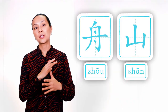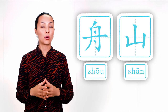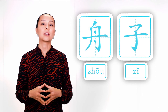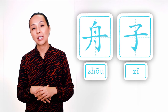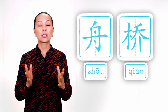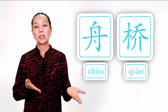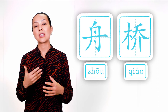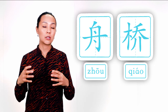As I said before, this radical is used as a separate word. The first example is a city name in Zhejiang province. The next example is the word boatman — 舟子 (zhōu zǐ): 舟 means boat, 子 means person in this case, though in general 子 has another meaning: baby. The next example is pontoon bridge or floating bridge — 舟桥 (zhōu qiáo). Boat plus bridge together means floating bridge, because in the past floating bridges were made from many boats joined together.